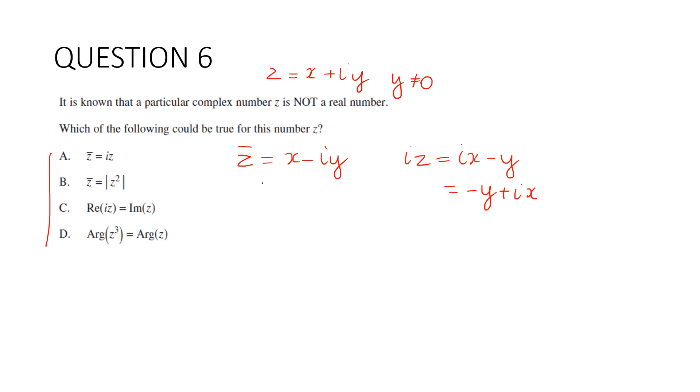Well, yes, we could. We could say z equals 2 - 2i, and conjugate of z would be 2 + 2i, and iz would equal 2i - 2i², which is 2i + 2. Wow, it's A.